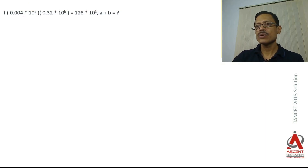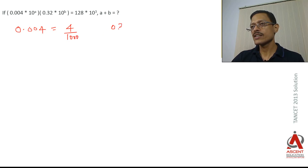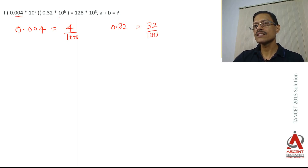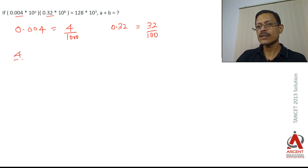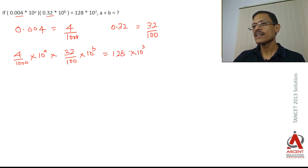Now we can solve the question. Converting the decimals to fractions will make things easier. 0.4 = 4/10, 0.04 = 4/100, so 0.004 = 4/1000. For 0.32: 0.3 = 3/10, so 0.32 = 32/100. So in the equation we have: (4/1000) × 10^a × (32/100) × 10^b = 128 × 10³.